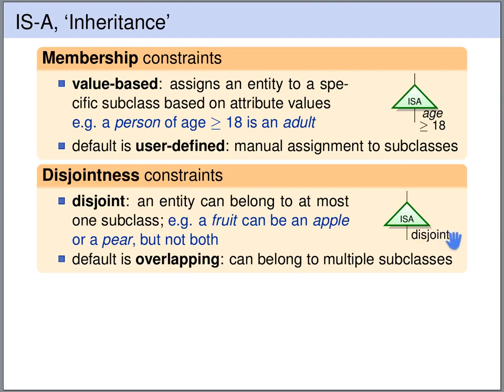We can also annotate the ISA node with a disjoint constraint. This means that every higher level entity belongs to at most one of the lower level entity sets — no entity belongs to more than one. An example would be that a fruit can either be an apple or a pear, but not both at the same time. If this disjoint annotation is not present, then the default is that the lower level entity sets may be overlapping — for example, a person can be both an employee and a customer at the same time.